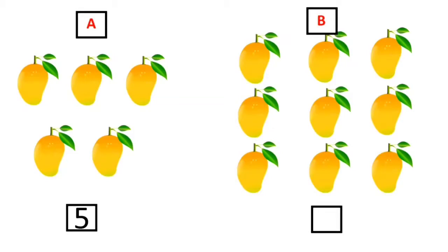Now in B set how many mangoes are there? 1, 2, 3, 4, 5, 6, 7, 8 and 9.